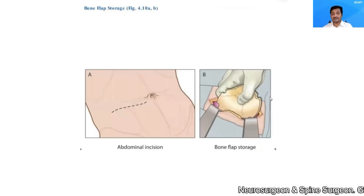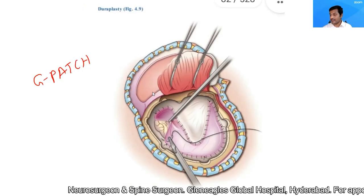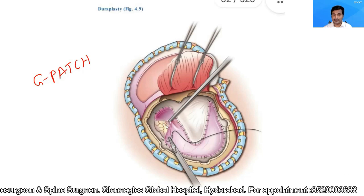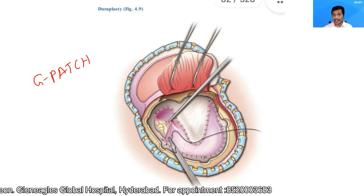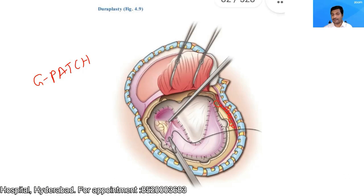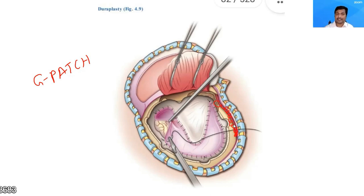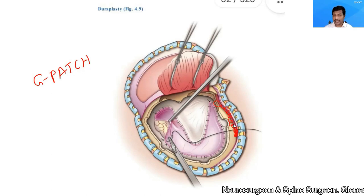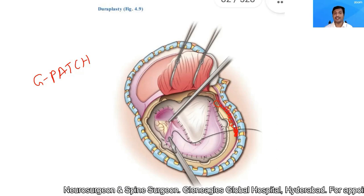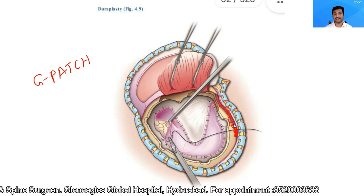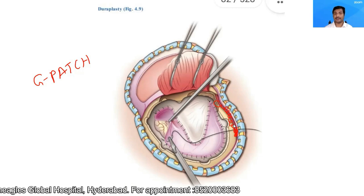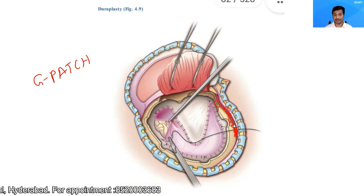Then I place the muscle and anchor it properly to the neighboring cuff of muscle. Then I place a closed drain without suction. I place it without suction and then close the skin in layers. This completes the cranial part of the decompressive craniectomy.